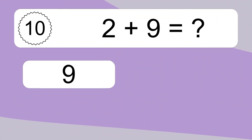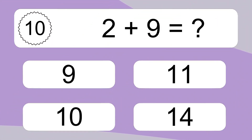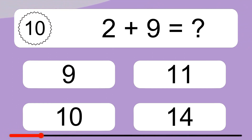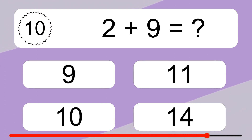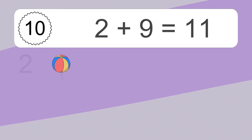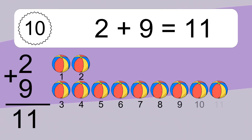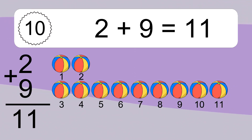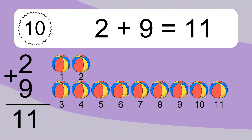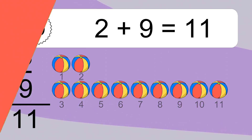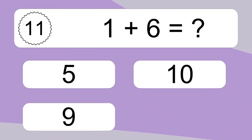2 plus 9 equals what? 2 plus 9 equals 11. Let's count it. 1, 2, 3, 4, 5, 6, 7, 8, 9, 10, 11.